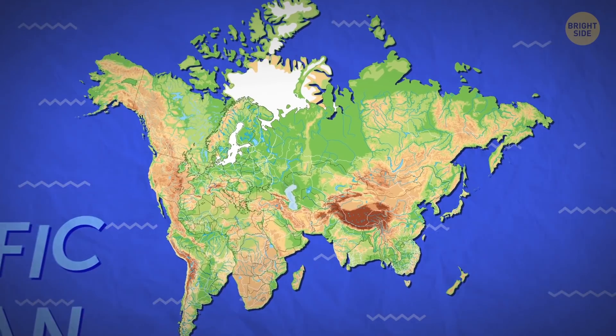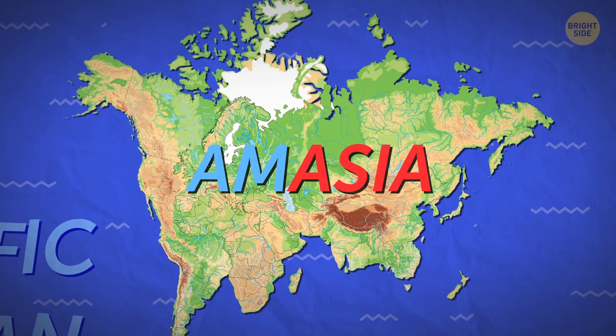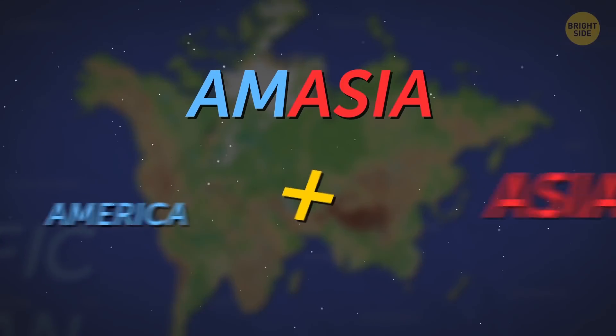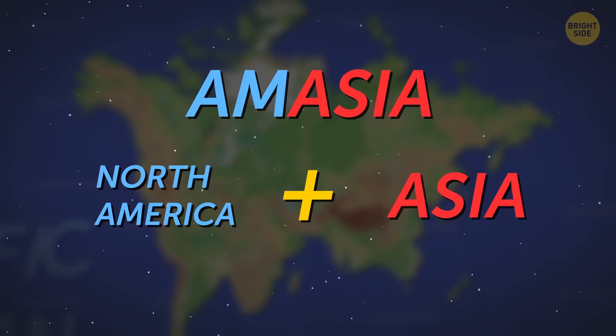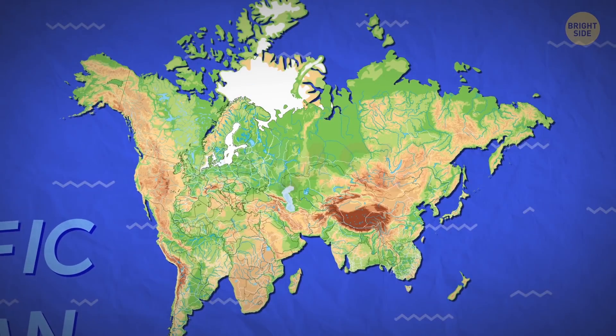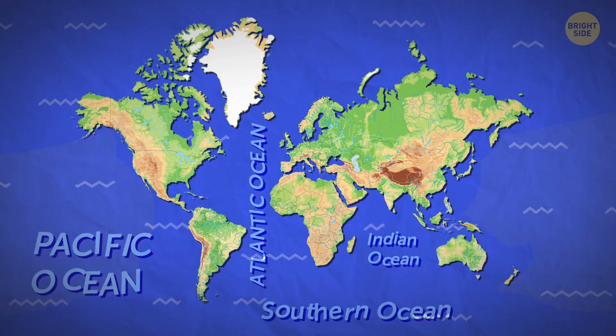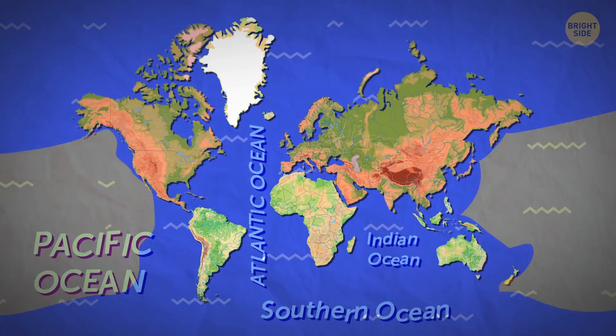This future hypothetical supercontinent is given the name of Amasia. It got the title from the idea that Asia will merge with North America. The theory relied on the fact that the Pacific crust is subducting under Eurasia and North America.